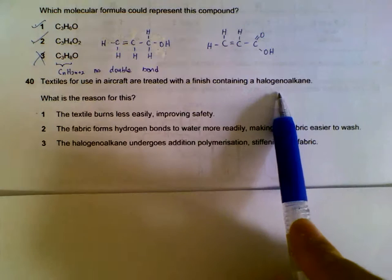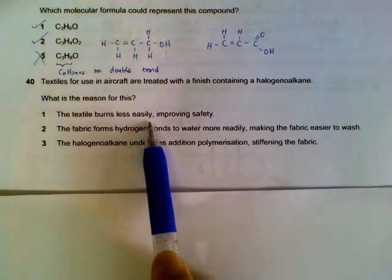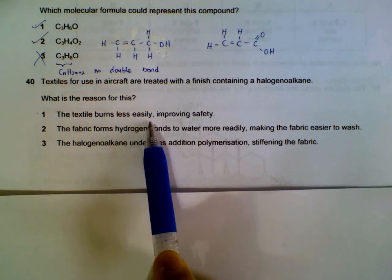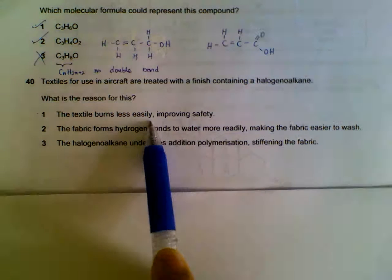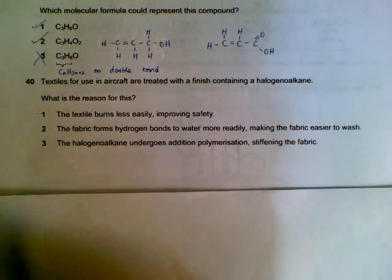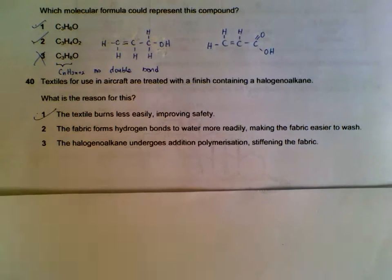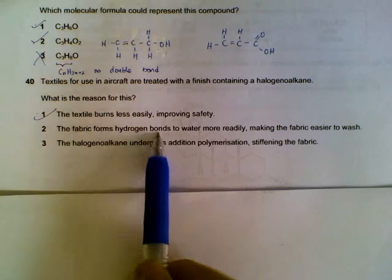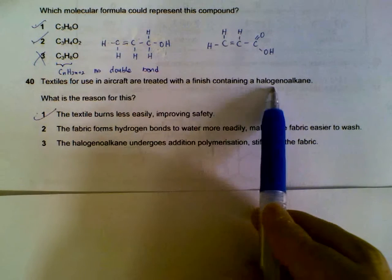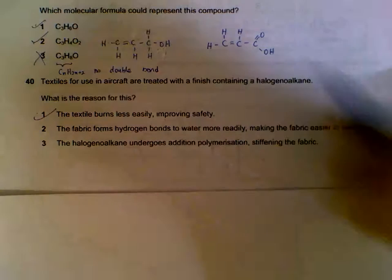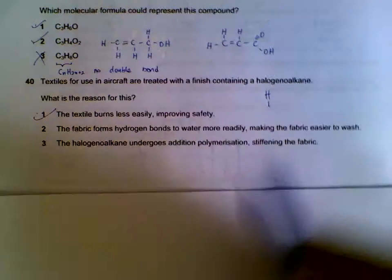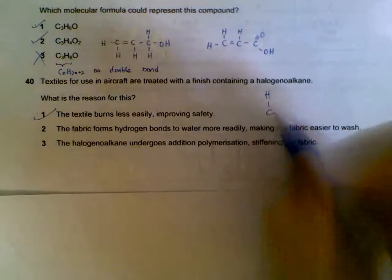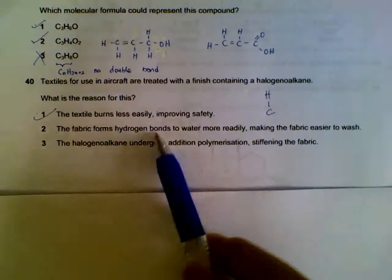Question 40. We have halogen alkenes. They can be CFCs and all that. It will make it less flammable, the textile will be safer. Can they form hydrogen bonds? The halogen alkenes, the hydrogen is not directly joined to your fluorine or chlorine, it's joined to a carbon instead. So there will not be hydrogen bonds.